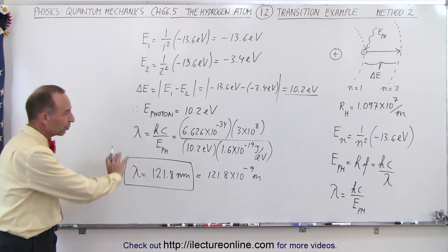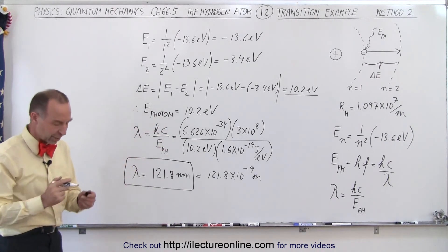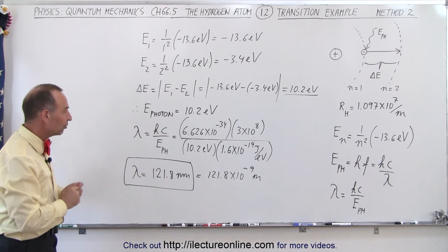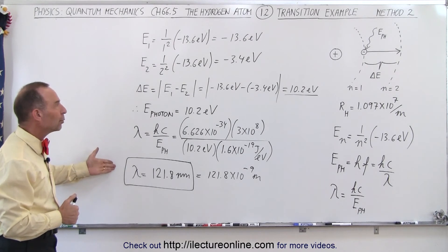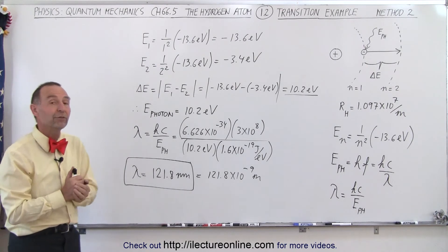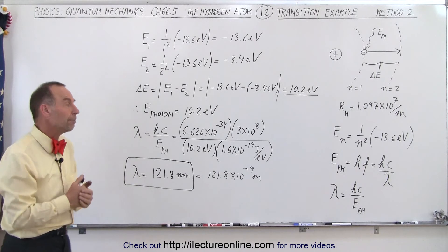That's simply just a roundoff error because we don't use exact values for some of these constants. But again, it shows that here's another method in which we can find the wavelength of the photon absorbed or emitted.